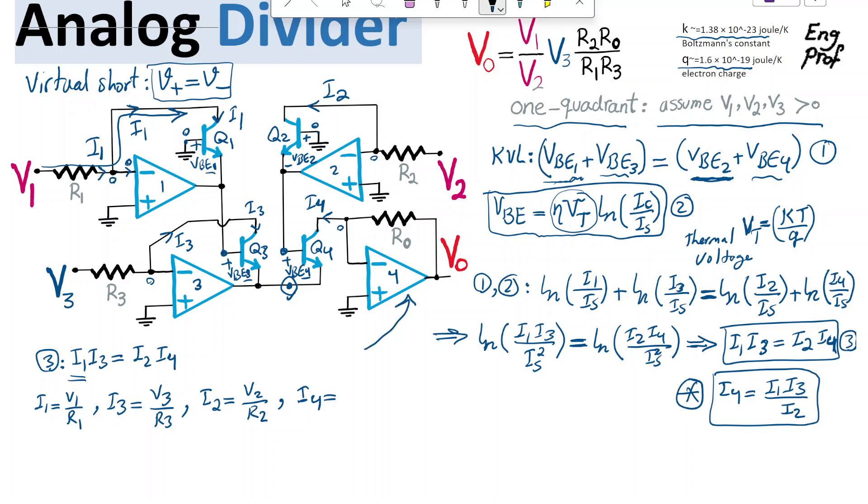is equal to, effectively, Vout, which is the voltage across Rout. And therefore, as a result, I4 is Vout over Rout.